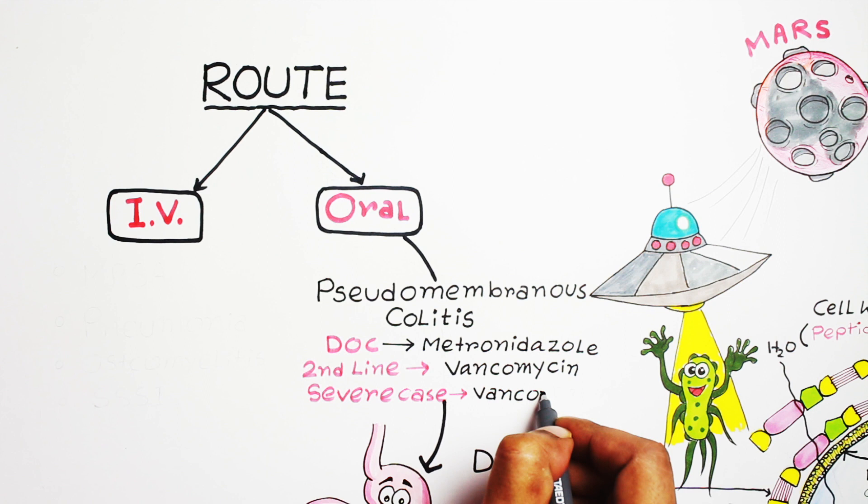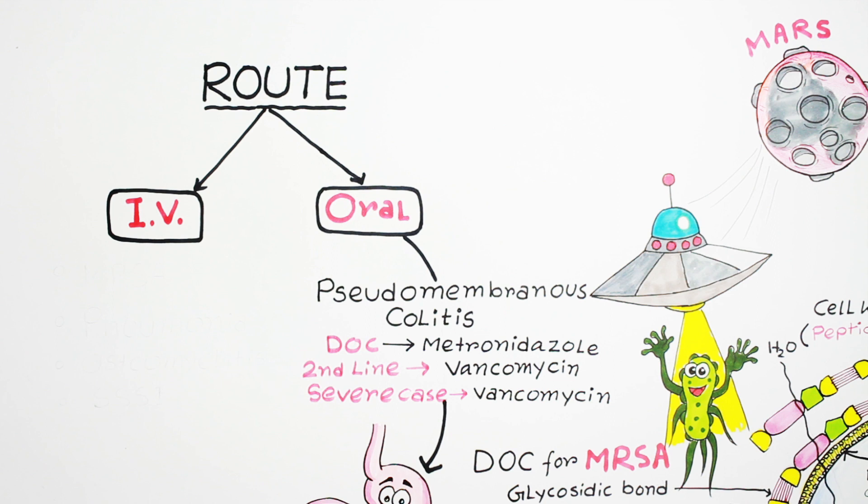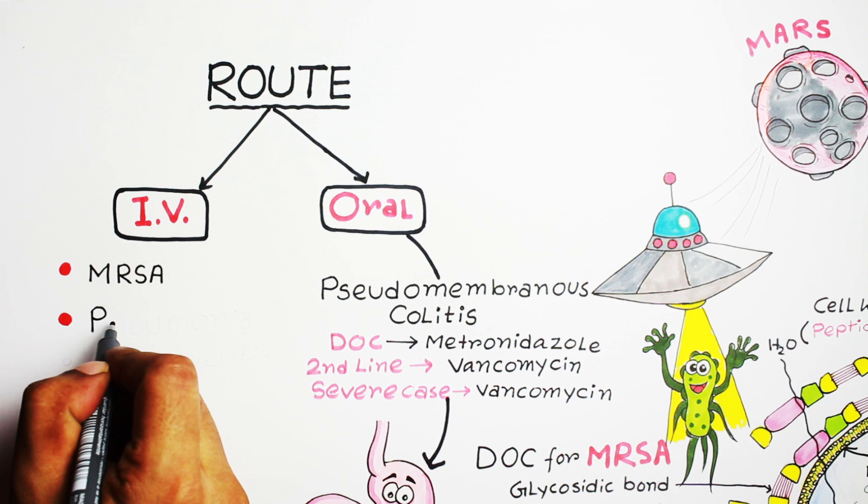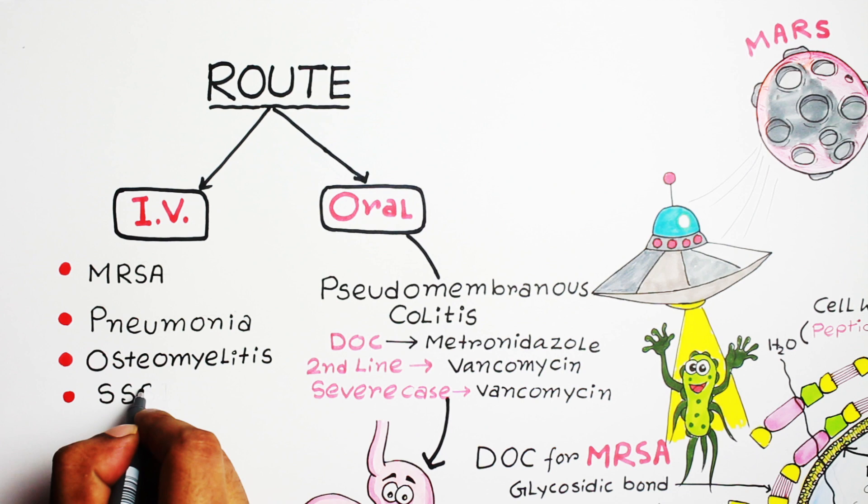But remember, in severe cases vancomycin is the first-line drug or drug of choice. Vancomycin is also used to treat pneumonia, osteomyelitis, and skin and skin structure infection, which is also called SSSI.